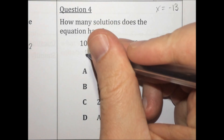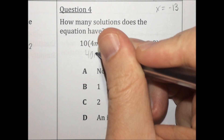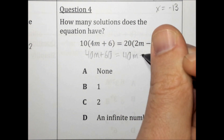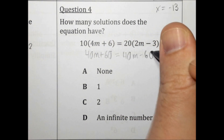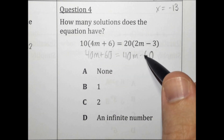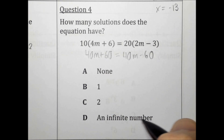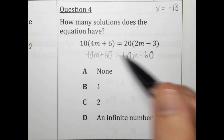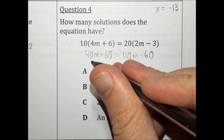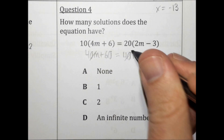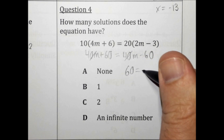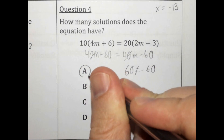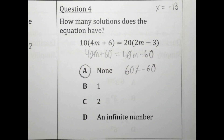How many solutions does the equation have? Let's distribute and get 40m plus 60 equals 40m minus 60. If this were plus 60 on the right, it would have infinite solutions because it would be the same on both sides. This is not the same on both sides. When you cancel out the variables on both sides, you get 60 equals negative 60, which is not true. This equation has no solutions — none.